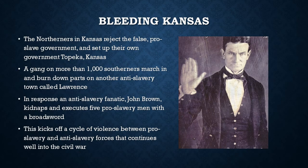But the northern majority in Kansas — the people who wanted Kansas to become a free state — were unhappy with this situation. They rejected the false pro-slave government set up after that first election and set up their own government in Topeka, Kansas, insisting that Kansas was a non-slave state. When this happened, a gang of more than 1,000 southerners marched in and burned down parts of an anti-slavery town called Lawrence.